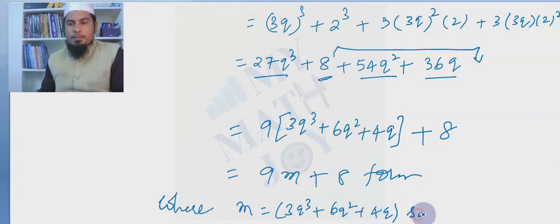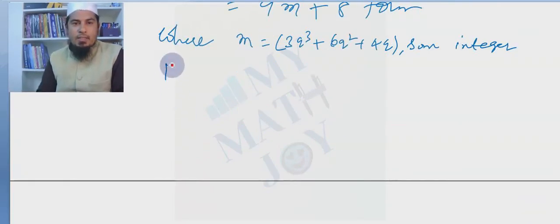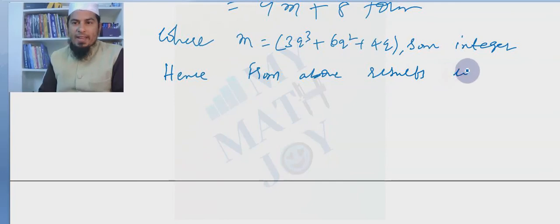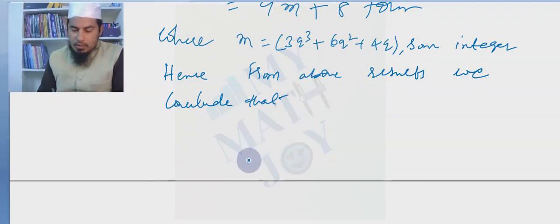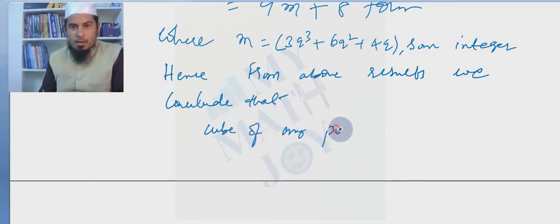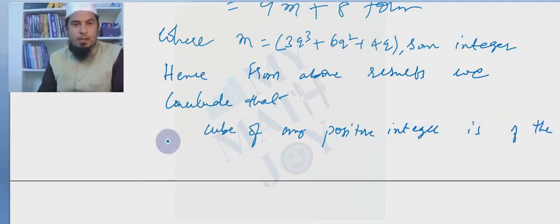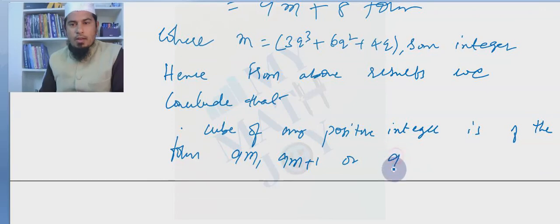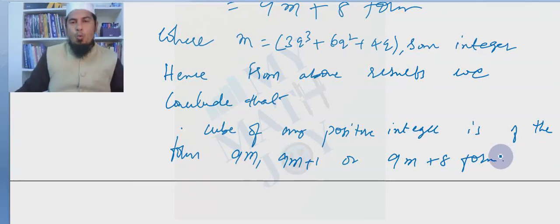Taking 9 common: a³ = 9(3q³+6q²+4q) + 8 = 9m+8, where m = 3q³+6q²+4q, a positive integer. Hence from all three cases, the cube of any positive integer is of the form 9m, 9m+1, or 9m+8.